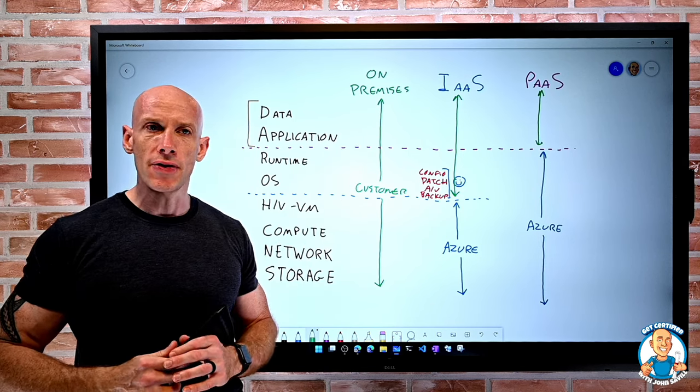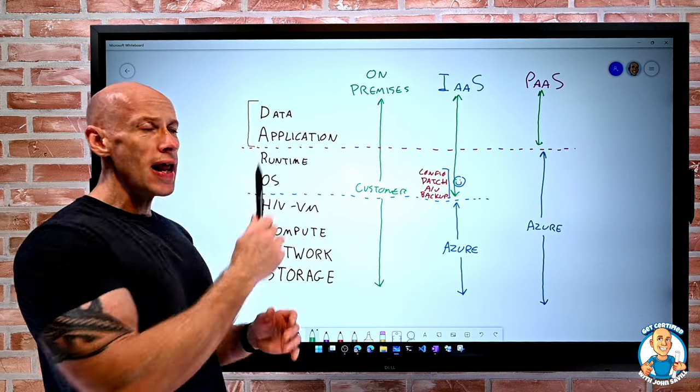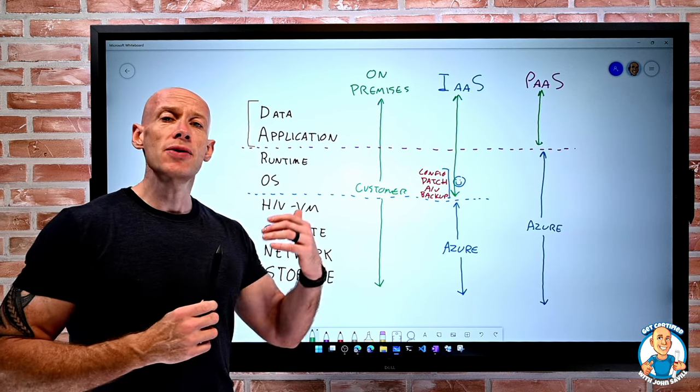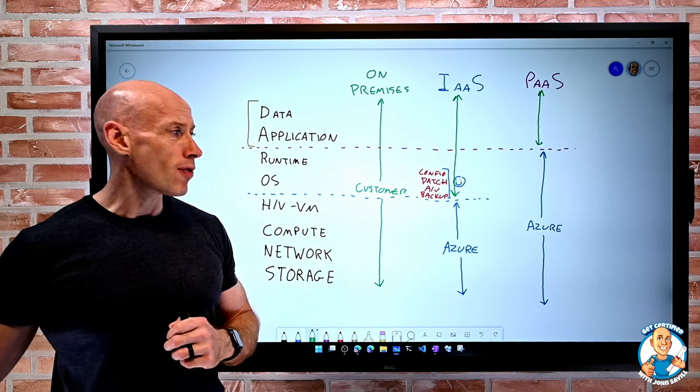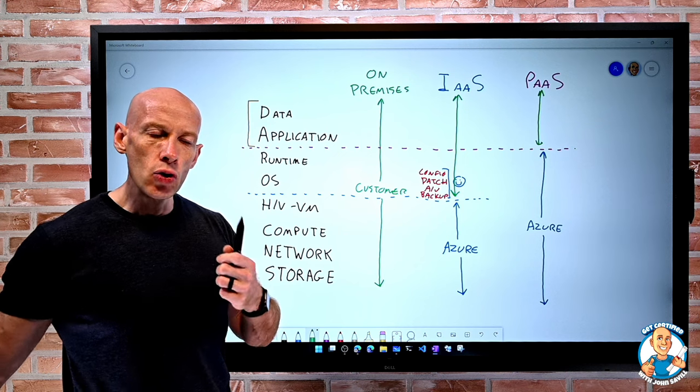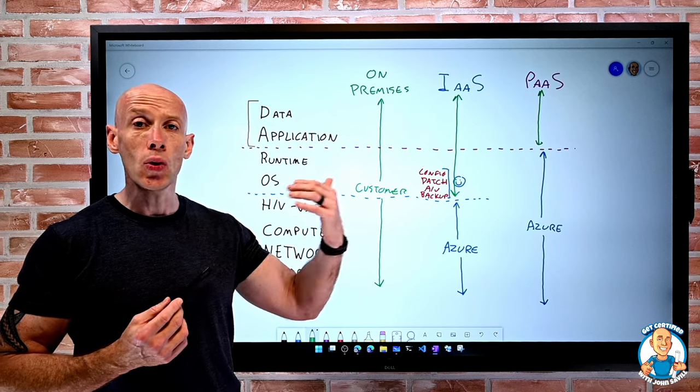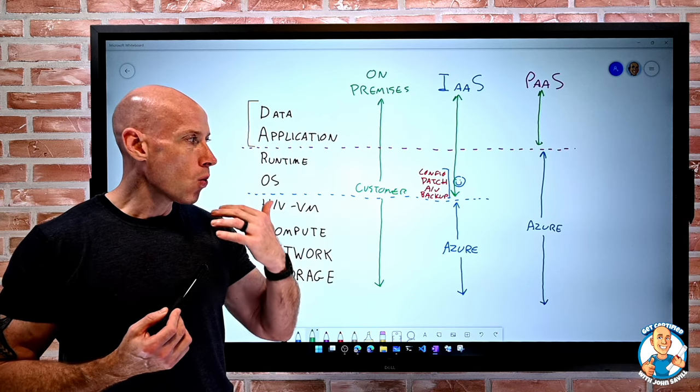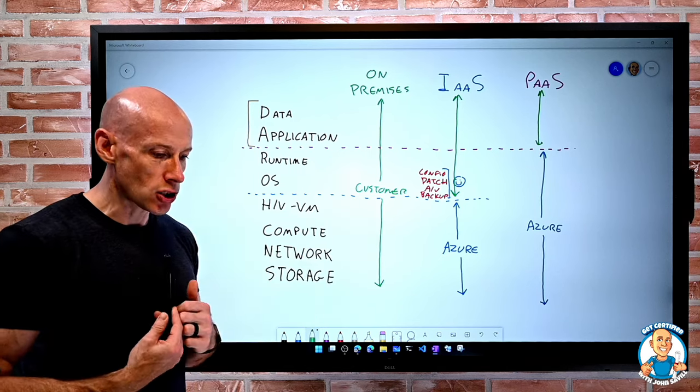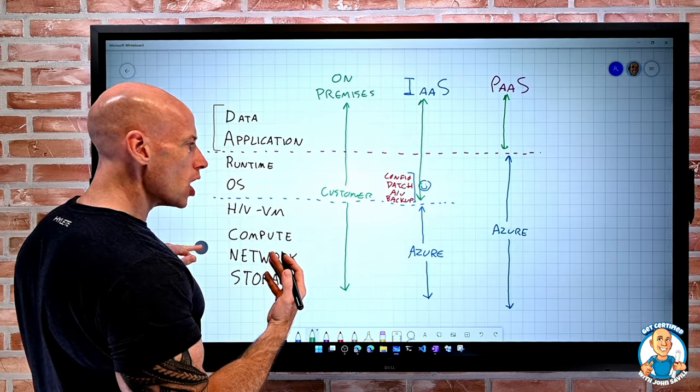For example, in Azure App Service, I can pick Windows or Linux. I can pick, do I want .NET? Do I want different types of Java? There's a whole bunch of different runtimes that I can select. So although I am losing some flexibility, there are a lot of configuration and choices. So I can pick the one that is closest to what I actually need.